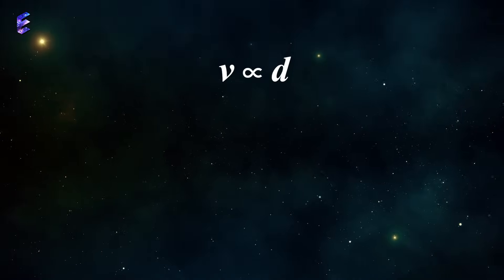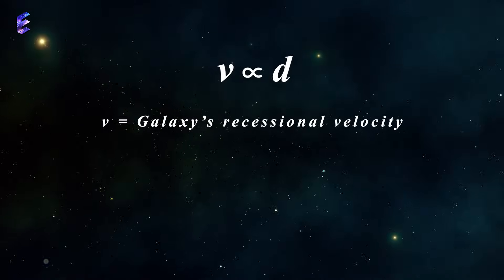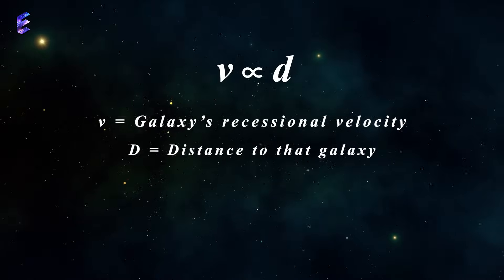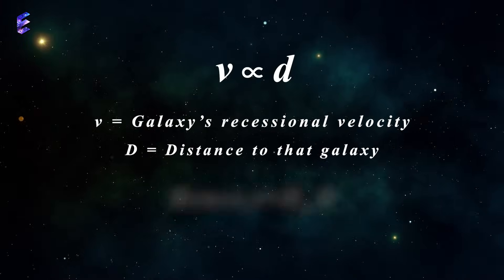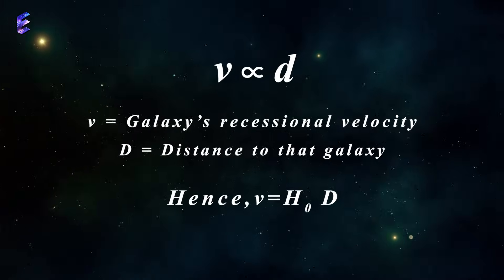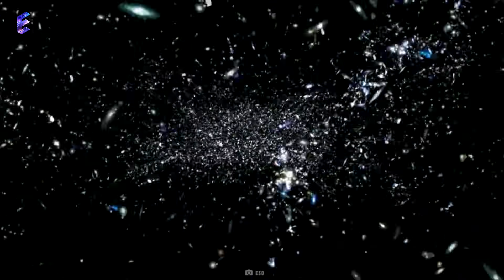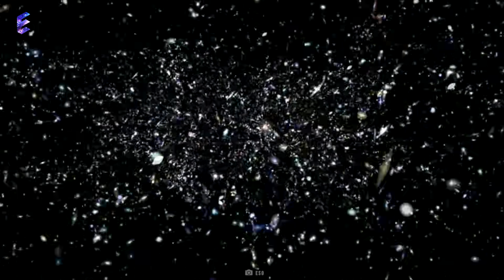V is directly proportional to D, where V denotes the recessional velocity of the galaxy and D the distance to that galaxy. This gave birth to the most contentious number in astronomy: the Hubble constant. This was the variable that described the rate at which the cosmos was expanding.